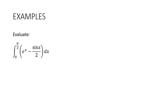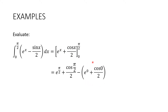Here's one with multiple terms: the integral between 0 and pi over 2 of e to the x minus sin x over 2 dx. Integrating: e to the x stays e to the x, and negative sin gives positive cos, with the one-half hanging around. Substitute pi over 2 in, subtract — making sure to use brackets for the second substitution. Cos of pi over 2 is 0, e to the 0 is 1, cos 0 is 1, giving e to the pi over 2 minus 1 minus one-half, which equals e to the pi over 2 minus 3 halves.